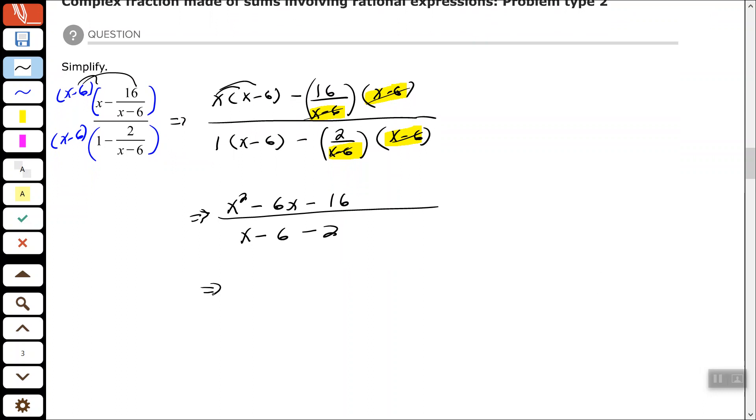Alright, I think I can factor the trinomial in my numerator. I need a pair of numbers that multiplies to be negative 16 that adds up to be negative 6, which will be negative 8 and positive 2. So I can write that as x minus 8 times x plus 2 factored out.